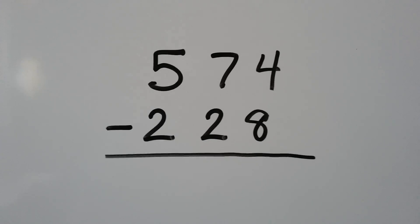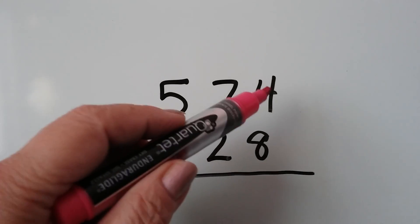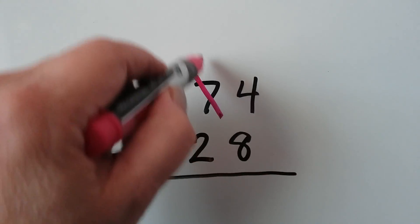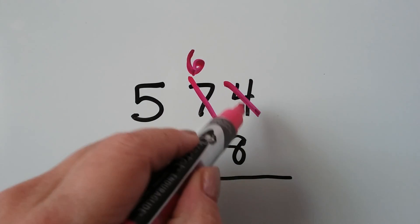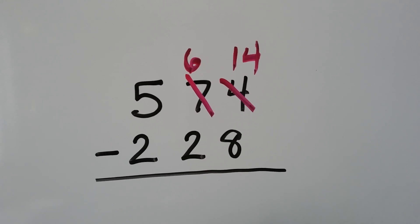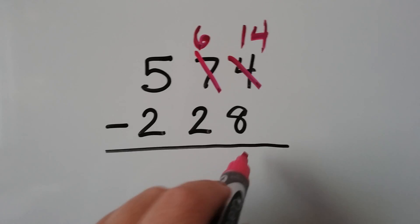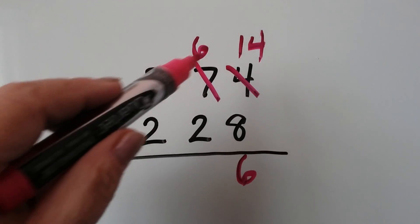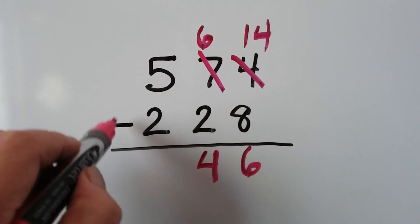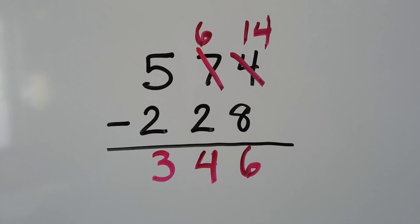Let's try this one. We have 574 and we need to subtract 228. In the ones place, we have a four and we need to take away an eight, and we can't because the eight's so big. So we're going to turn this into a six and regroup our four ones into 14 ones because we gave that ten to the ones place. 14 take away eight — if you said six, you're right. Six take away two is four. And five take away two is three. We have 346.